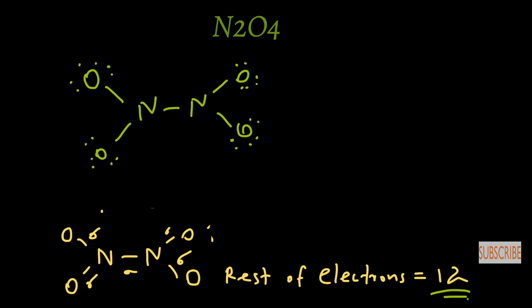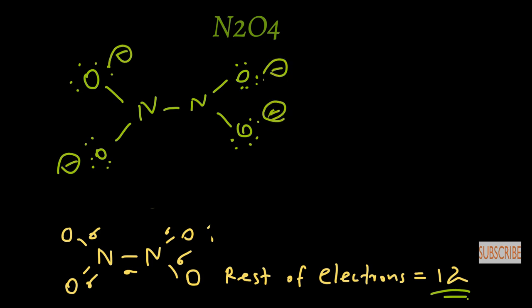After filling all four oxygen atoms there are no more remaining electrons. We now consider the charges: each oxygen takes a minus charge, so all four oxygen atoms have a minus charge, and both nitrogen atoms take a plus two charge.